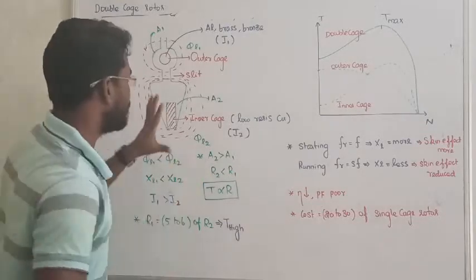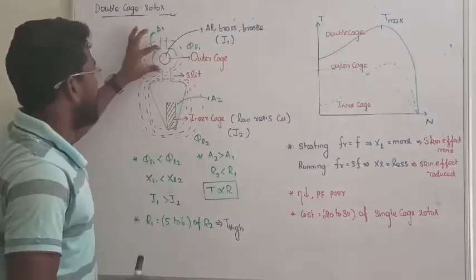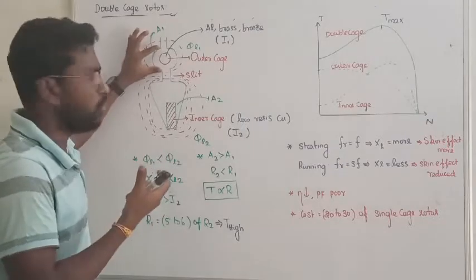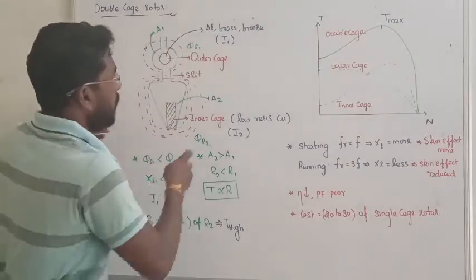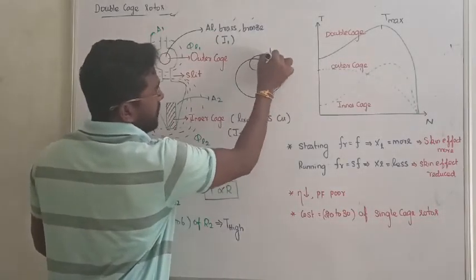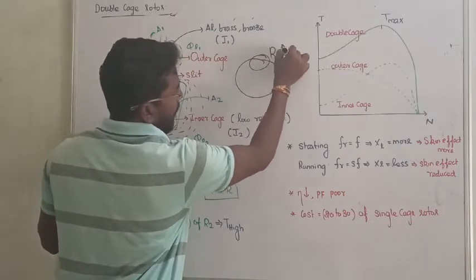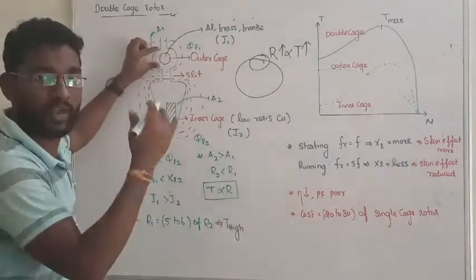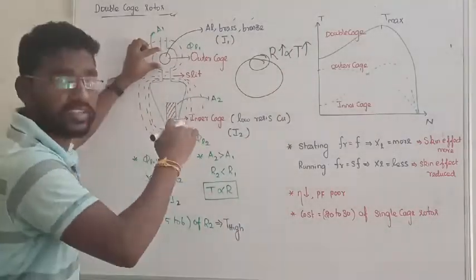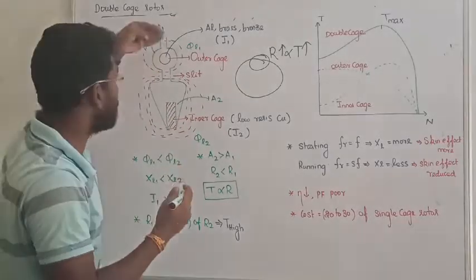It is same as our deep bar. Actually what we can say here, the outer value which is very low area, if the resistance is very high, then only we can develop more starting torque. The resistance of outer cage, the area is less so the resistance value is increased.